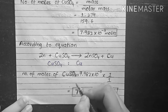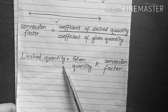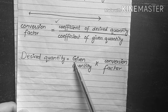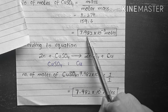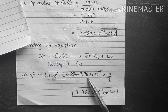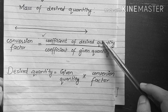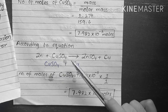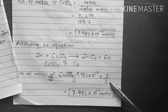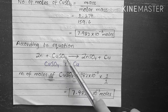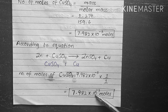The number of moles of copper is calculated using the formula: moles of desired quantity equals moles of given quantity multiplied by the conversion factor. The given quantity is 7.982 × 10⁻³ moles of copper sulfate. The conversion factor is the coefficient of the desired quantity (copper = 1) divided by the coefficient of the given quantity (copper sulfate = 1).